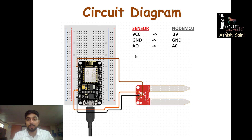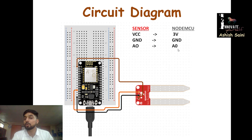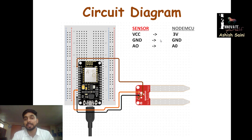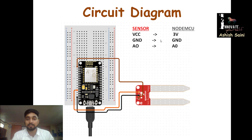Here you can see the pins for the sensor and the pins for the NodeMCU. We will connect VCC to 3V, Ground to Ground, and AO to the A0 pin on your NodeMCU. Now let's make the connections in the hardware section so that we can further write the program.